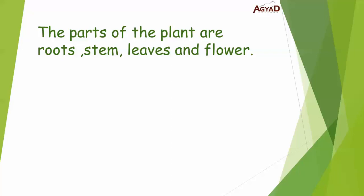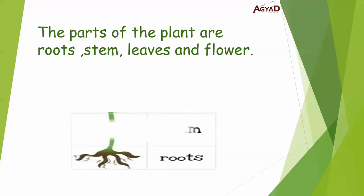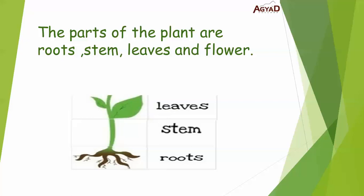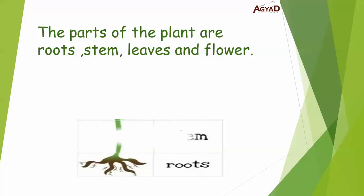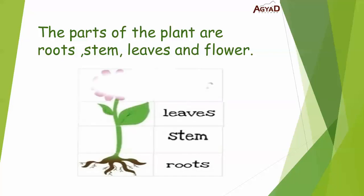So the parts of the plant are roots, stem, leaves and flower. One more time: roots, stem, leaves and flower.